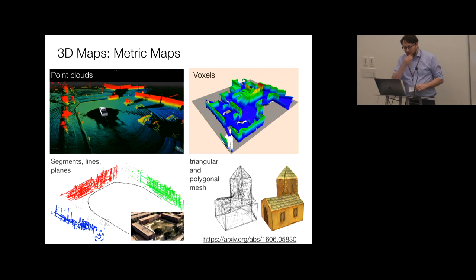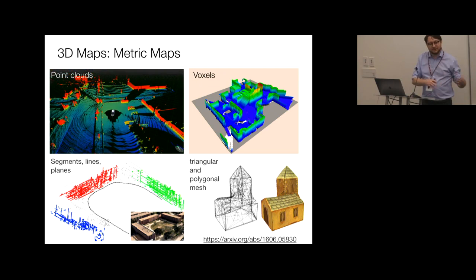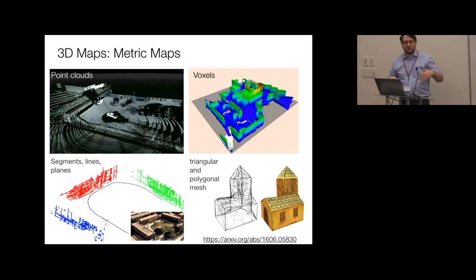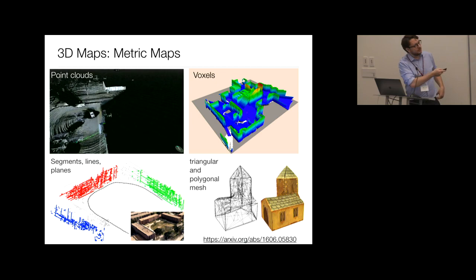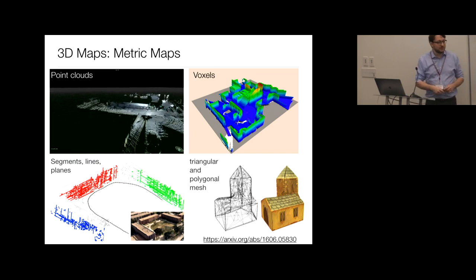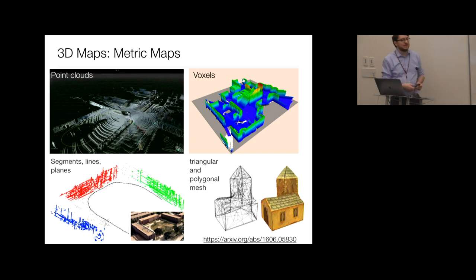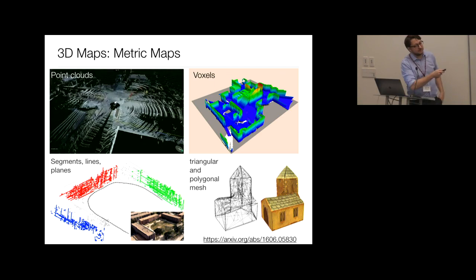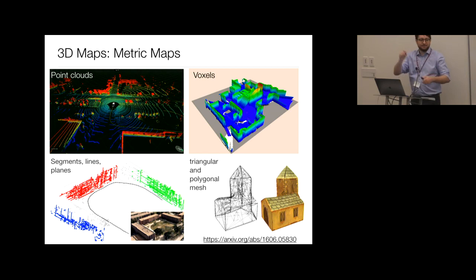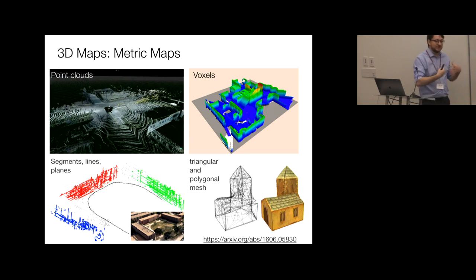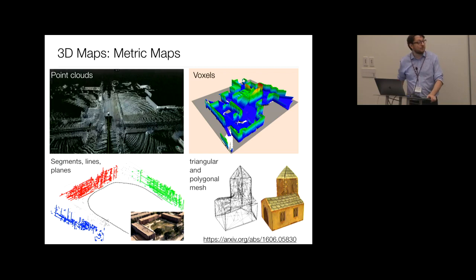All these 2D representations extend to the 3D case. Points, segments, and polygons extend directly to 3D point clouds from a 3D lidar, or mesh representations. The occupancy grid extends to voxels — a 3D discretization in X, Y, Z. However, you should start worrying about computational cost, as these 3D representations are typically very large in terms of memory.